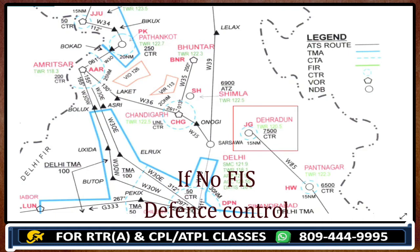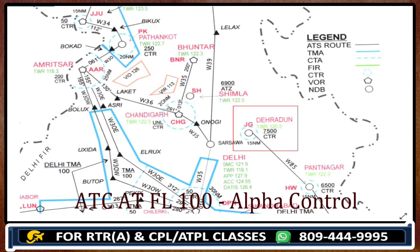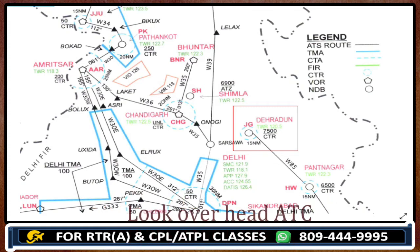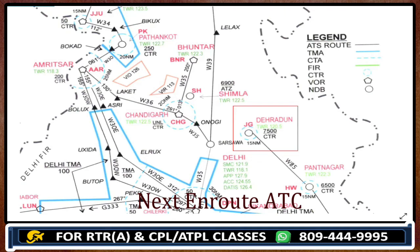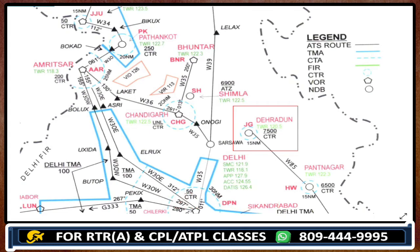If there is no FIS available, we will call defense control — that is Alpha Control here. If there is no defense control, we look overhead, but there is no overhead ATC available in this situation either. So we go for the next ATC available, which would be Delhi Control.